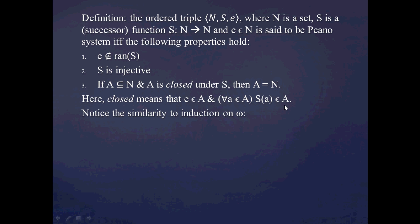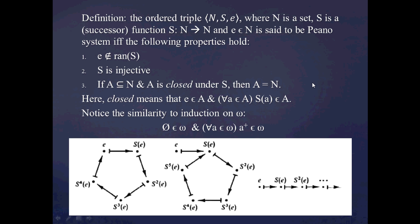You should notice this is very similar to what we said induction on omega meant — that if the empty set is in omega, and for all elements in omega, the successor is also in omega. So instead of the successor A+, what we said is that the s operation upon a is in A. So those are the three conditions we need for this ordered triple to be a Peano system.